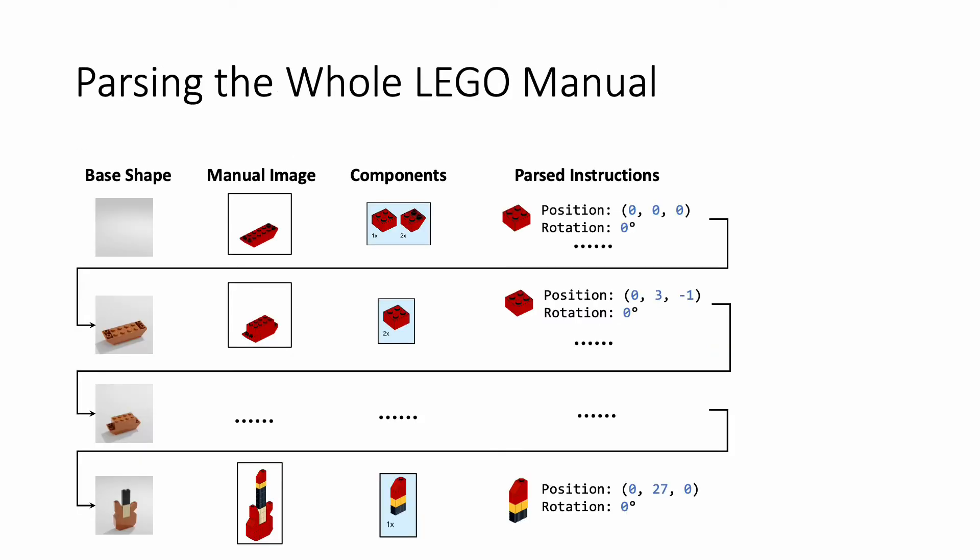Once we can predict the poses for components in every step, we can parse the whole manual from scratch sequentially, where we use the predictions in previous steps to update the base shape as well as the sub-modules in the current step. In this way, we can parse the whole LEGO manual and output the executable plan to build a target LEGO object.